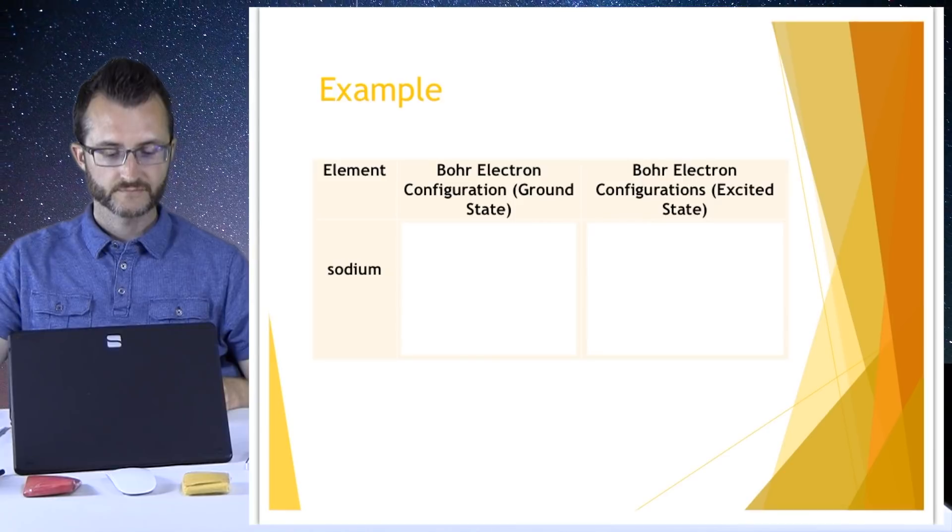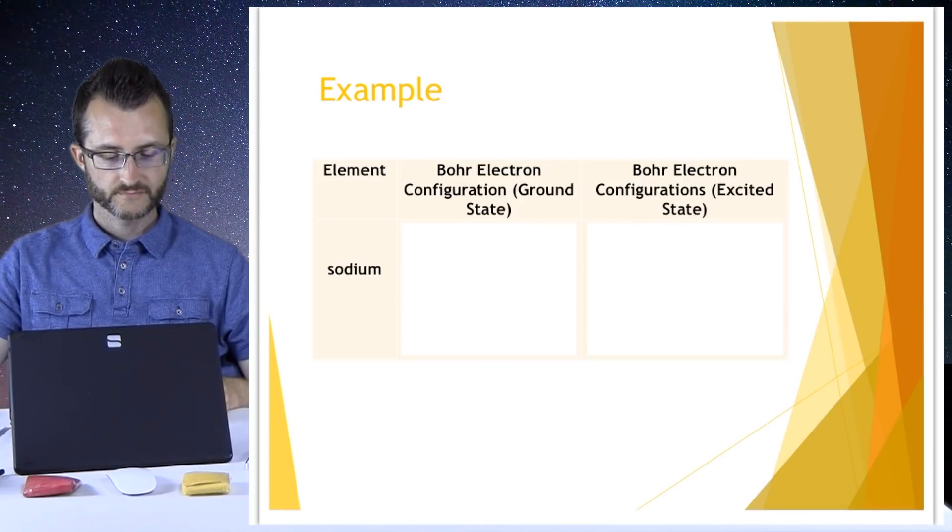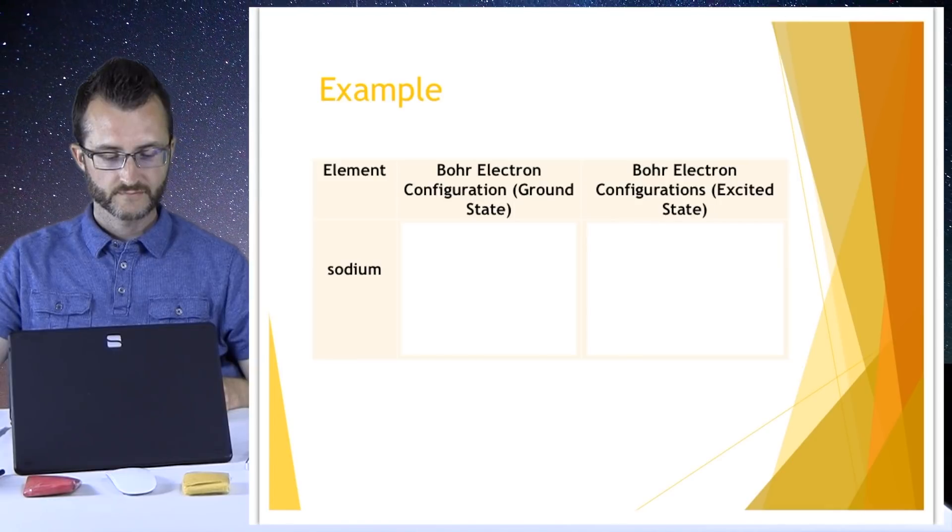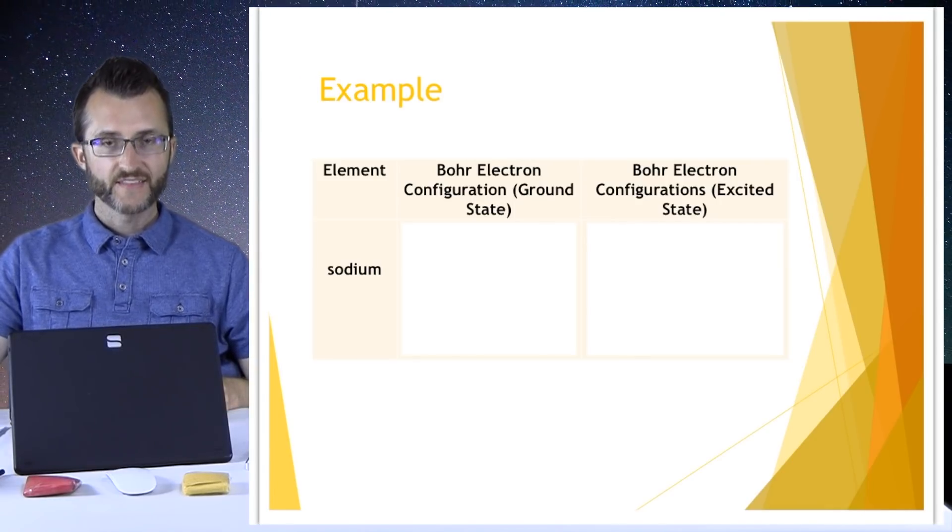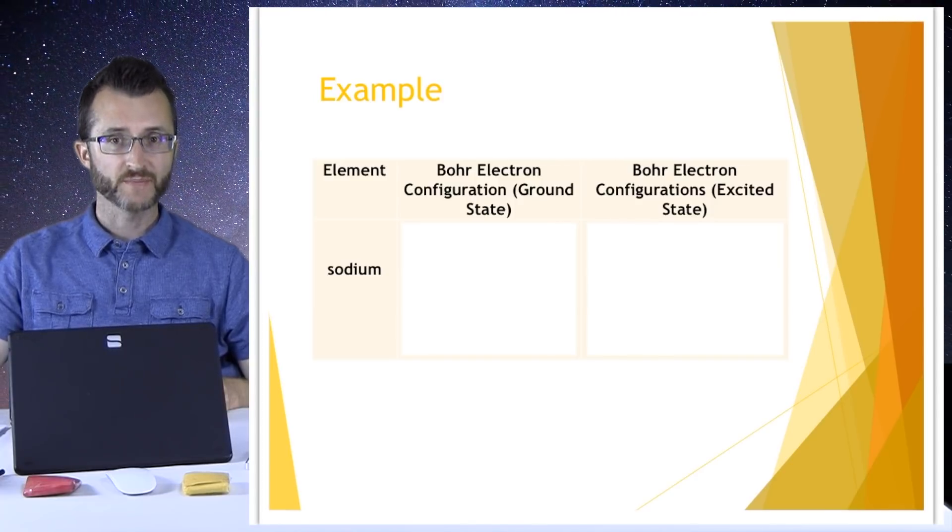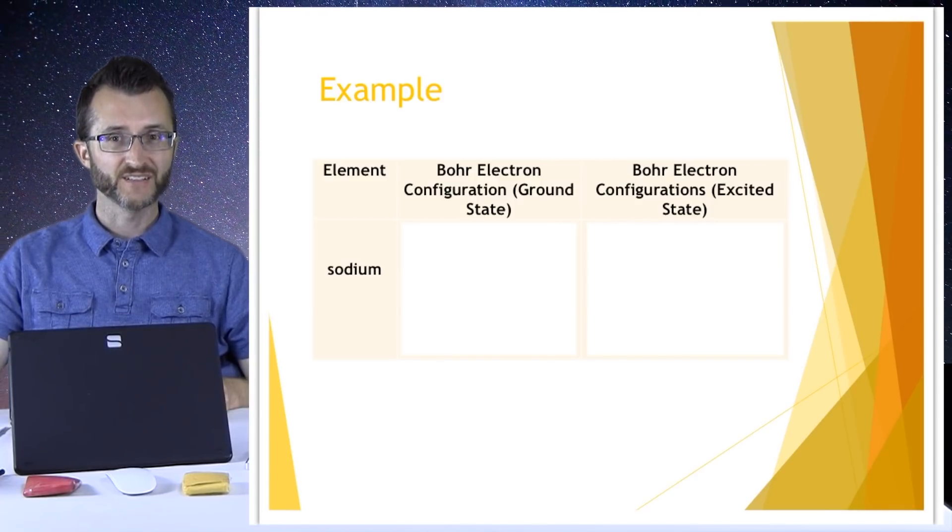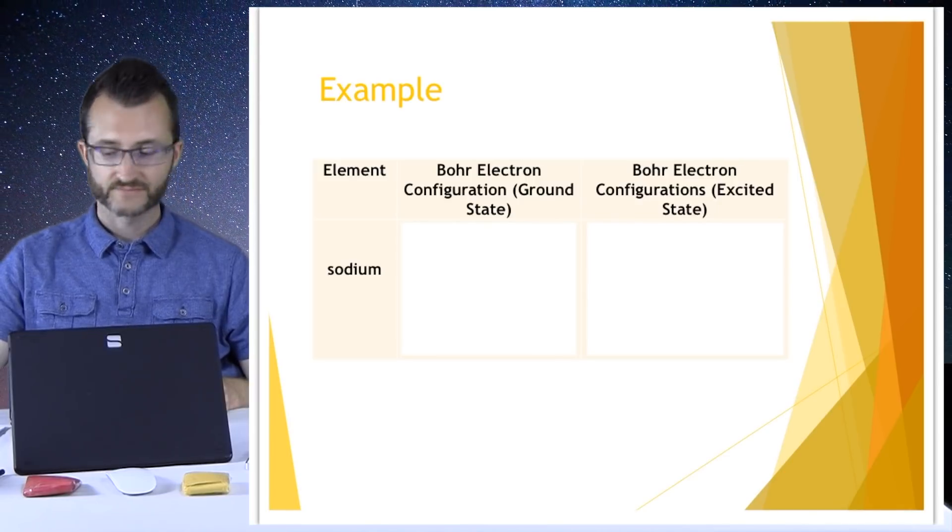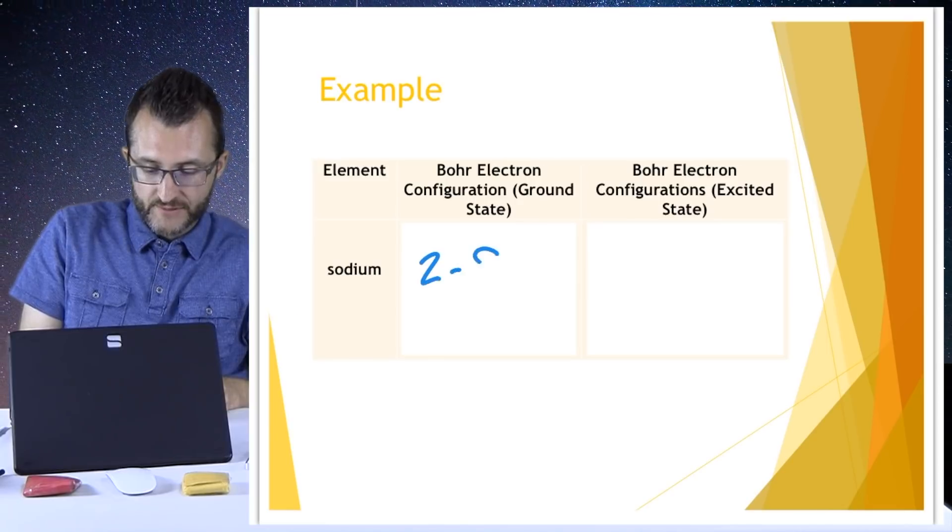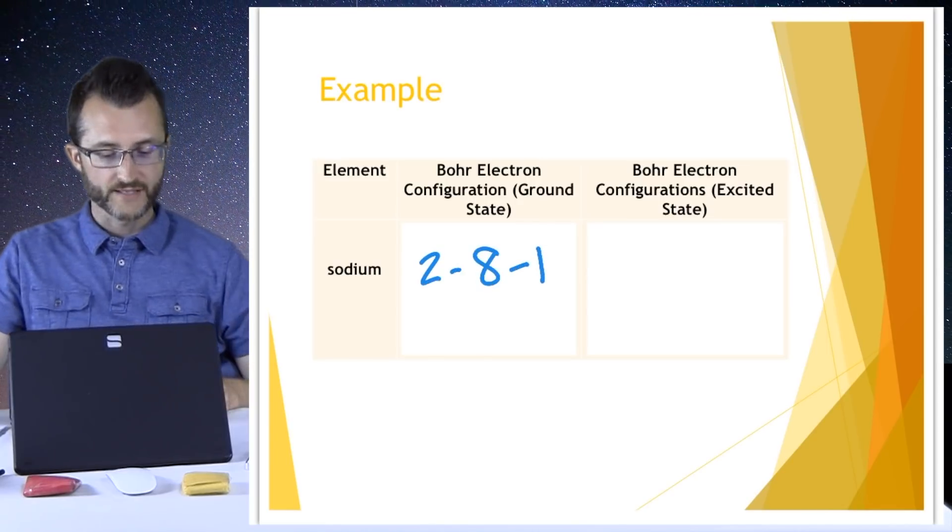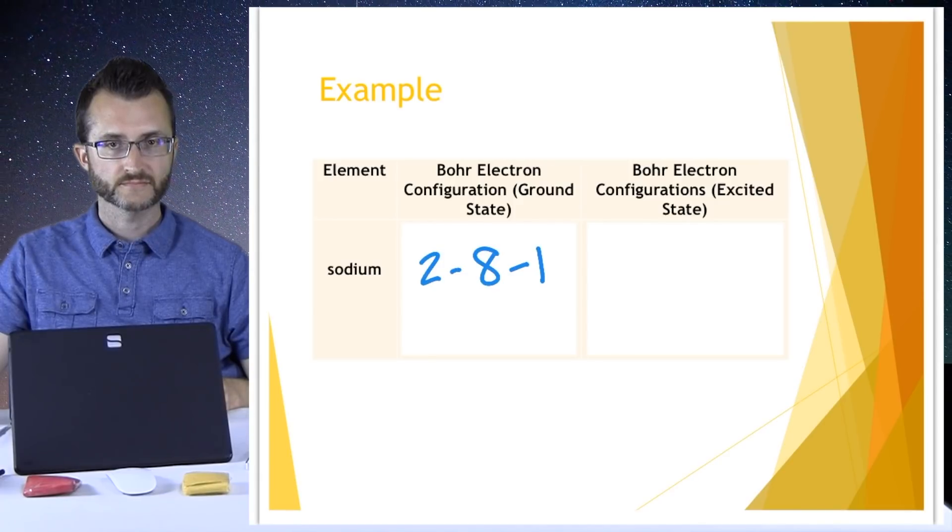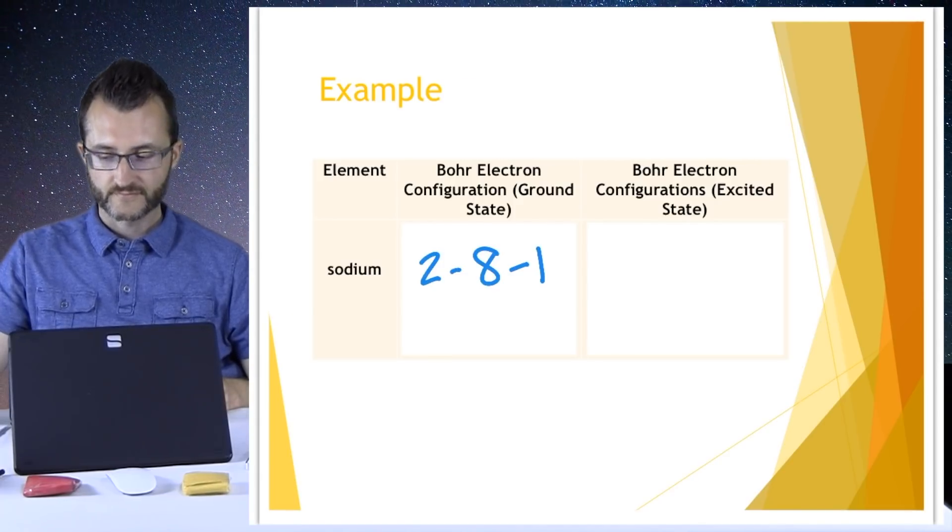The element we're dealing with here is sodium. So where do I find the Bohr electron configuration for sodium in the ground state? Well, I think that if I find the electron configuration listed for sodium on the periodic table, that that would automatically mean it's in the ground state. That is correct. So for sodium, it says on the periodic table 2-8-1. Good, and it's good to know that every element has only one ground state electron configuration.